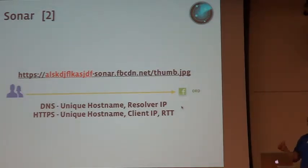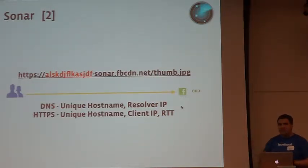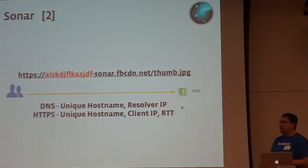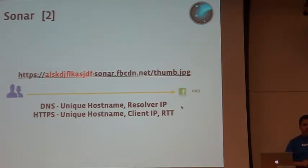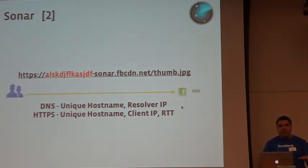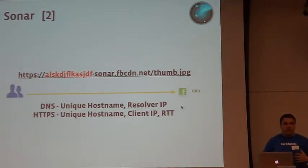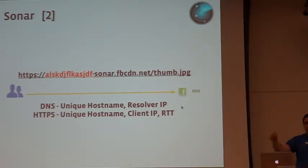We don't support eDNS0 yet — it's in development. So today, if you're using Google DNS, there's a pretty good chance you're misrouted to a POP that's not the best one — probably close to the DNS server. For example, if you were in central Africa and the closest 8.8.8.8 server was in Europe, we'd route you to Paris instead of Cairo.